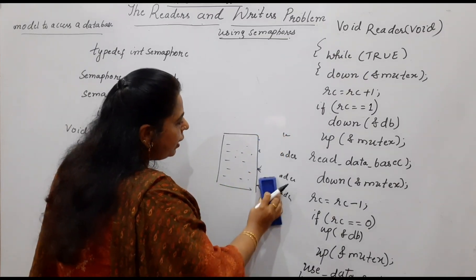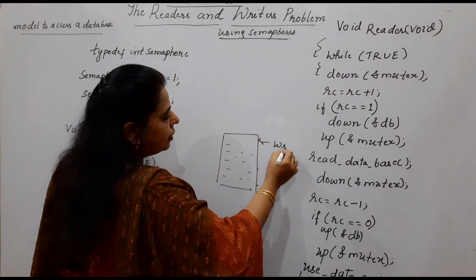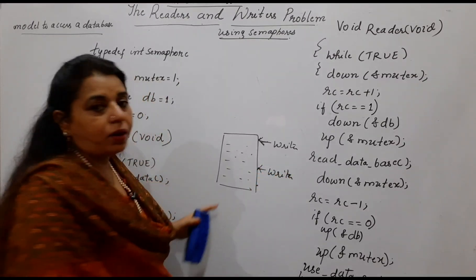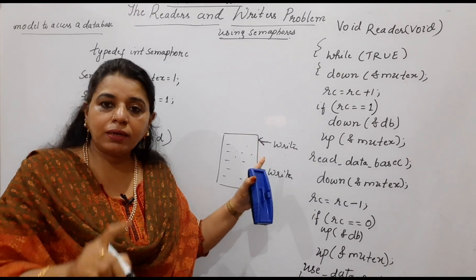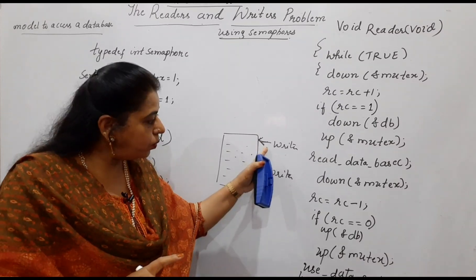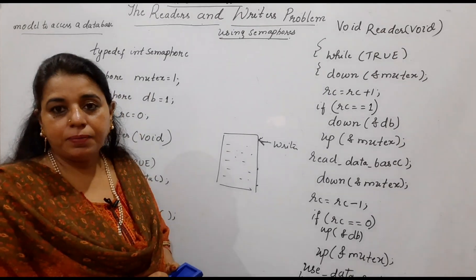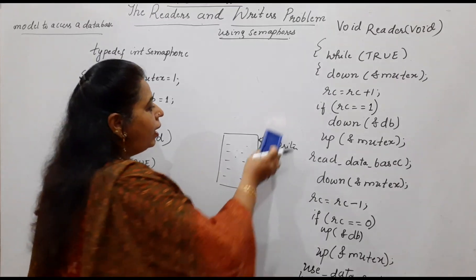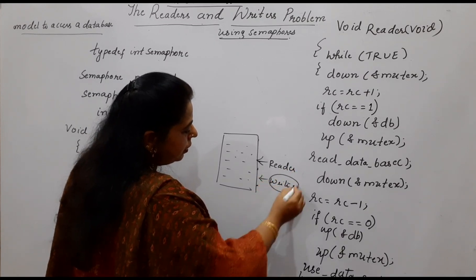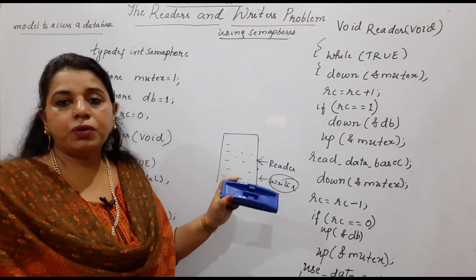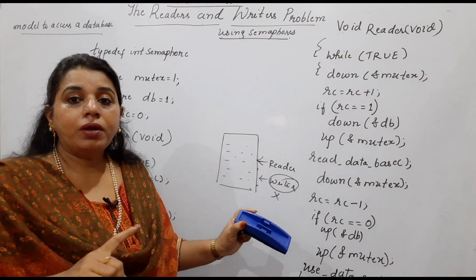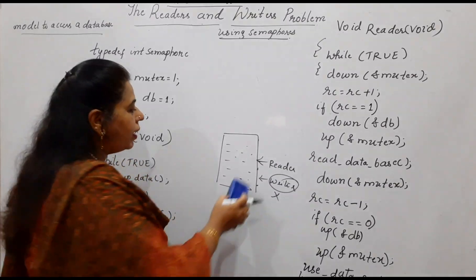When it comes to writers, can you allow more than one writer? If already one writer is trying to write into the database, you cannot allow one more writer. Once a writer comes into picture, another writer should not write anything into the database at the same time. So in this problem, you cannot allow more than one writer — only one writer should be allowed to access the database. Whenever there is a reader, another writer should not be allowed. This is the actual problem: whenever a writer is present, you should not allow any other writer or reader to enter the critical section.